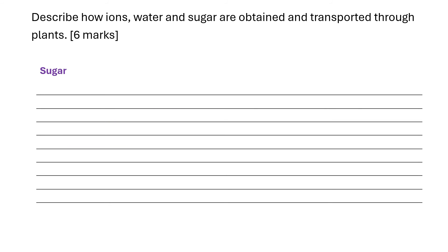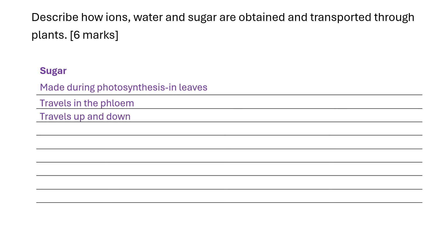Thirdly, we've got to talk about sugar. Sugar is made during photosynthesis in the leaves. Sugar doesn't travel in xylem — sugar travels in the phloem. It travels up and down to other parts of the plant, so it'll travel from the leaves to the flowers and from the leaves to the roots.